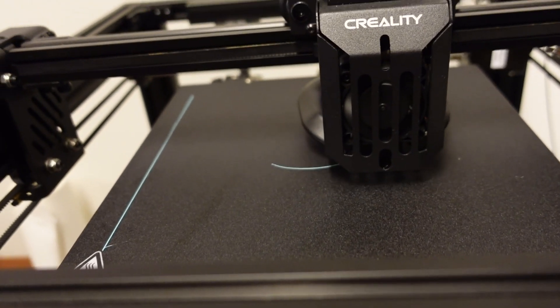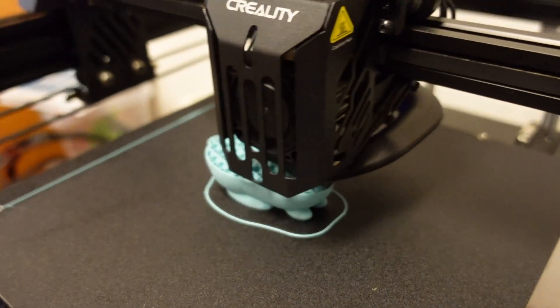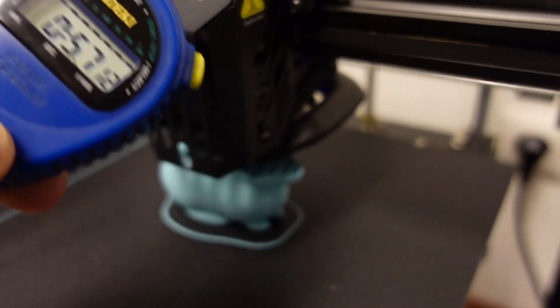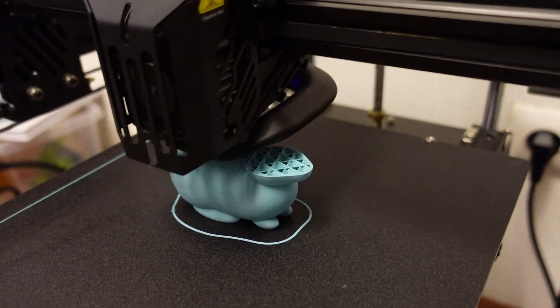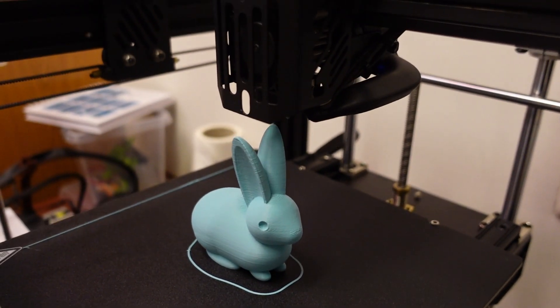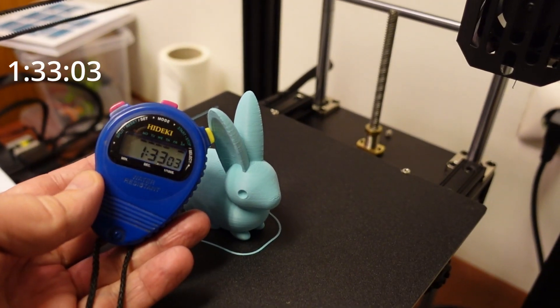The next printing was this Creality Rabbit but I scaled it up 200%, and again this is everything in real time speed. After approximately one hour of printing, finishing the printing. The printing time: one hour and 33 minutes.